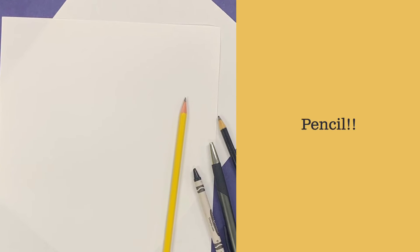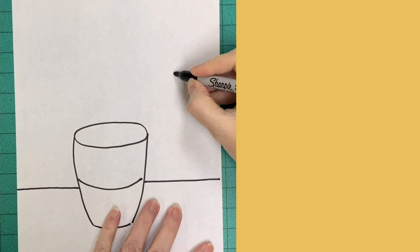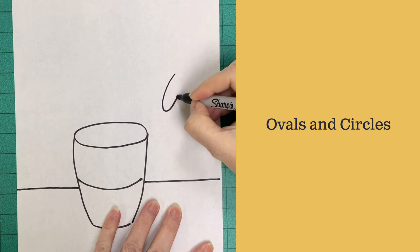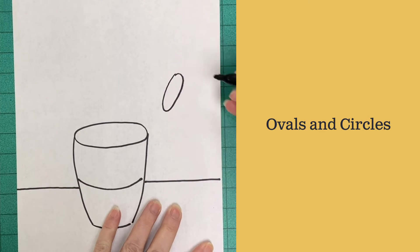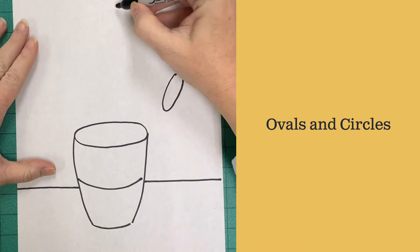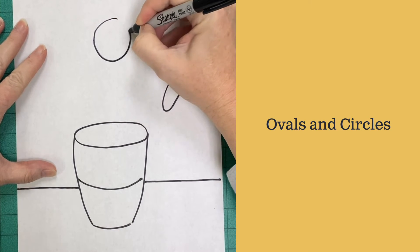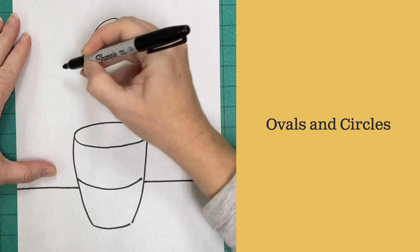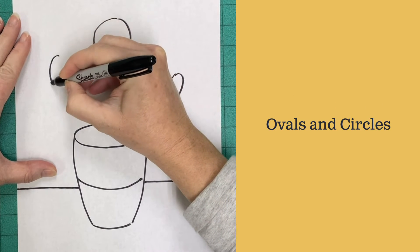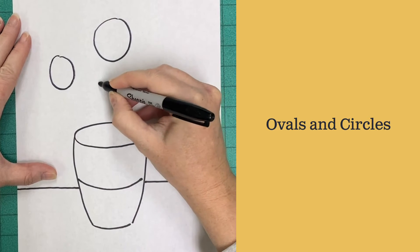You're still going to need just a pencil today. You need to add ovals and circles of pretty good size above your vase. Space them out. Don't draw tiny ovals or circles. Draw them pretty big. You're going to need about six or seven of them.